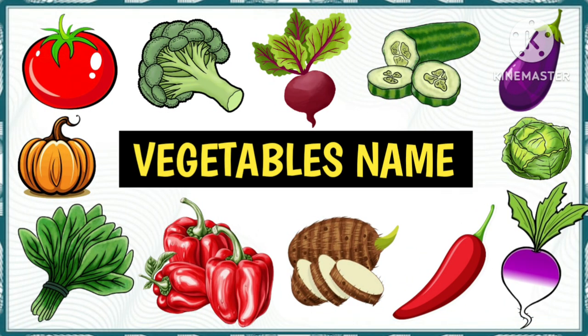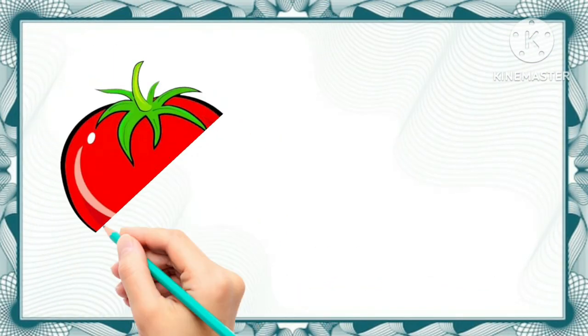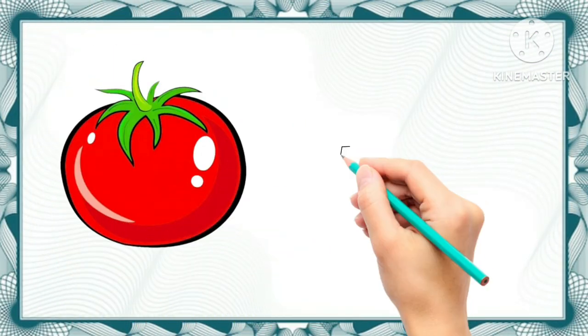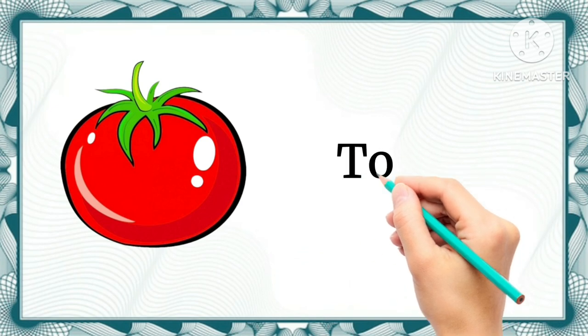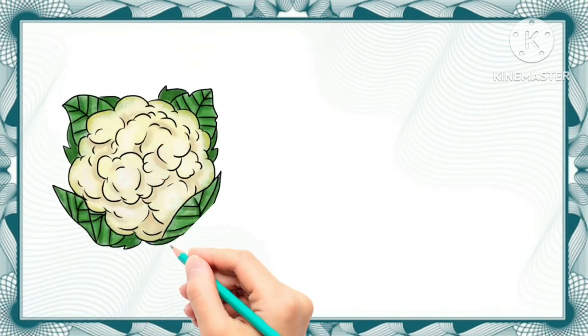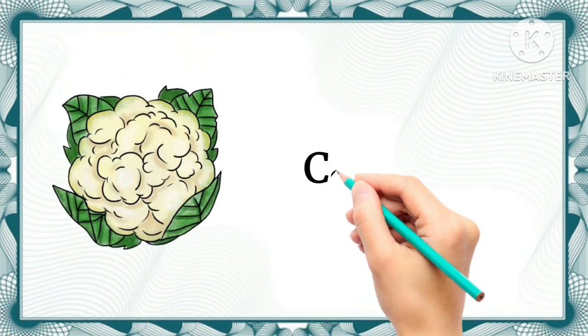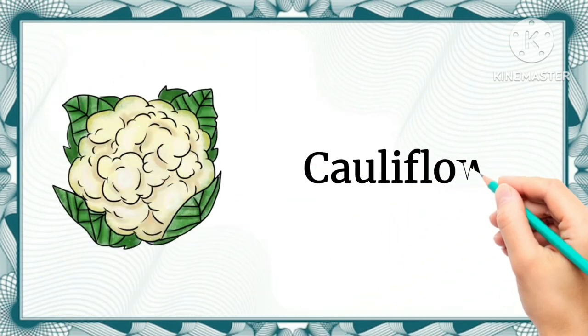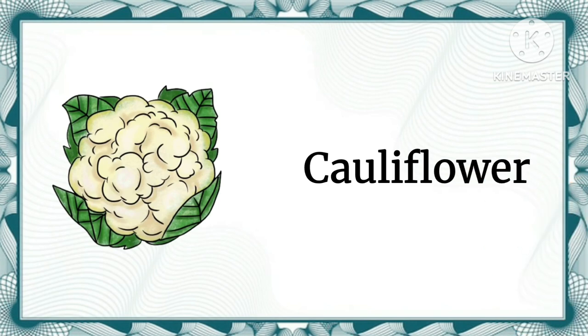Hello dear kids, today we will learn vegetables names. Are you ready? Let's begin. Tomato - this vegetable is tomato. Cauliflower - this is cauliflower.